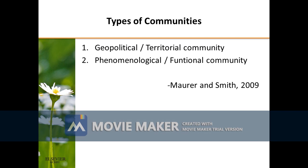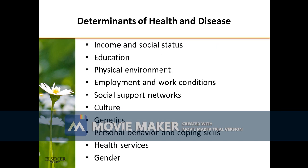Communities are also divided into two types: territorial community and functional community. In community health nursing, there are determinants of health and disease. Health is influenced by many factors, which may generally be organized into five broad categories known as determinants of health: genetics, behavior, environmental and physical influences, medical care, and social factors.